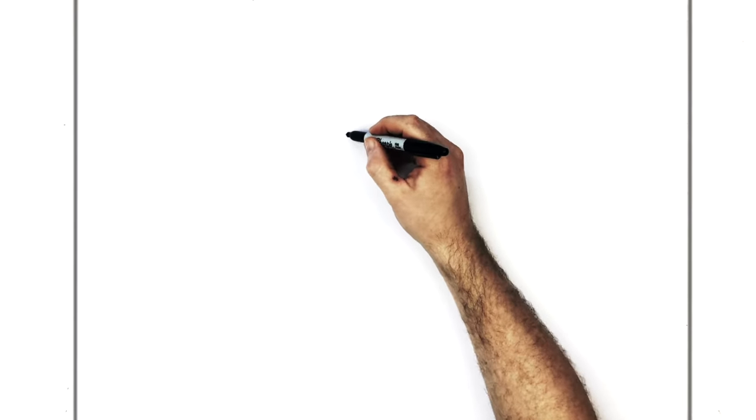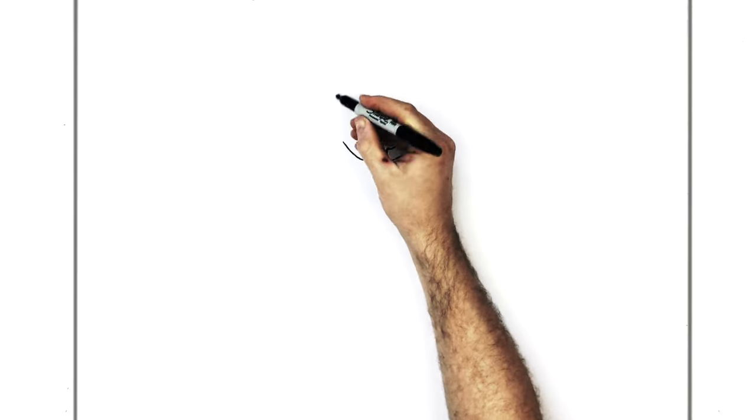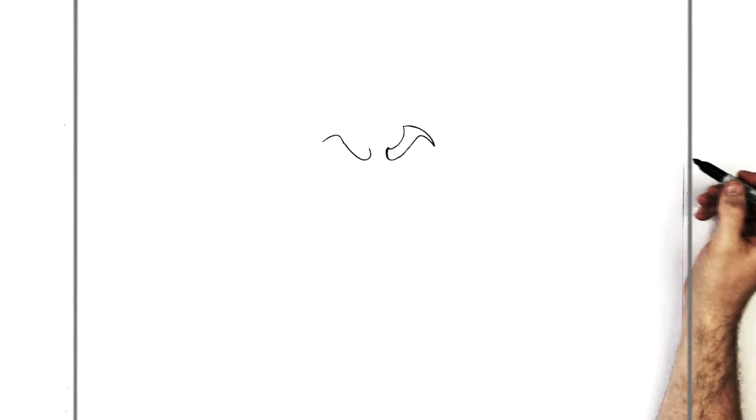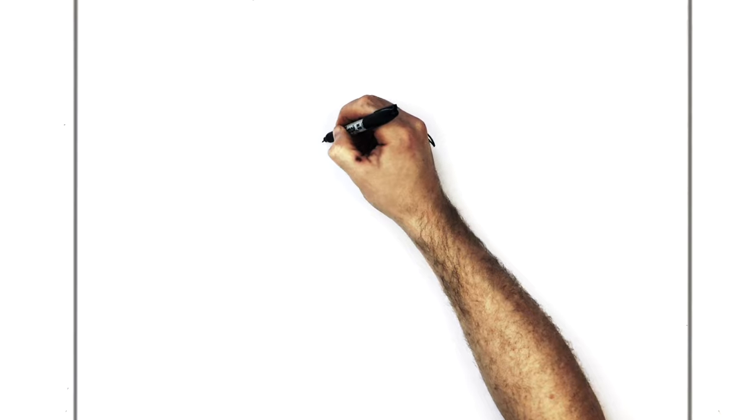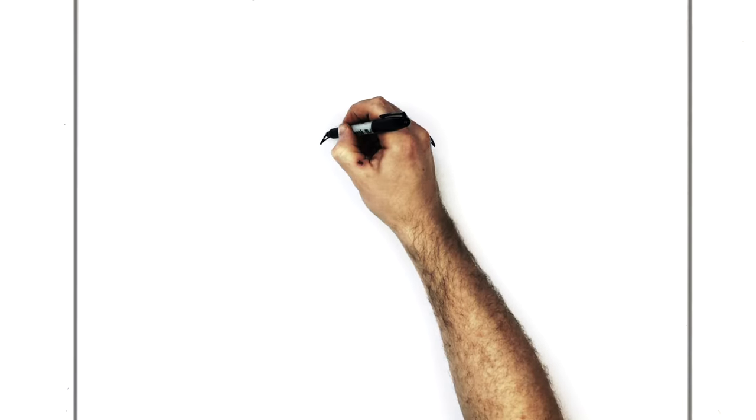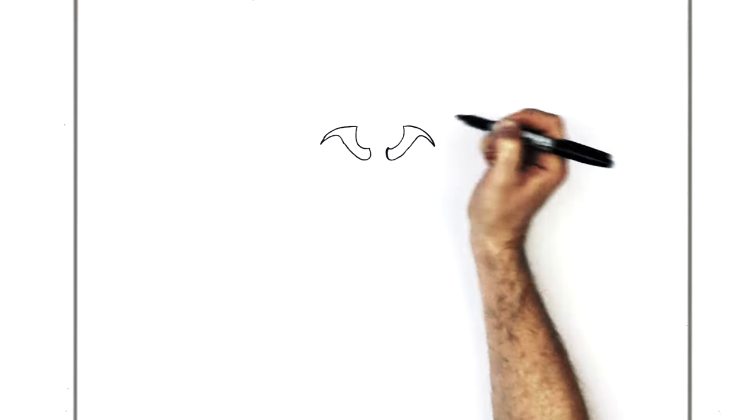All right. It'll be the same thing pretty much on the other side. So, curve it up. Down. And then we hook. Back around to there. Back down into here. Okay.